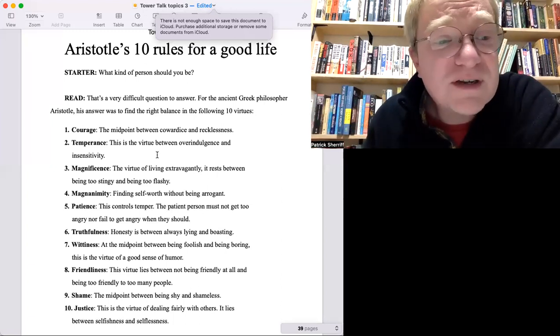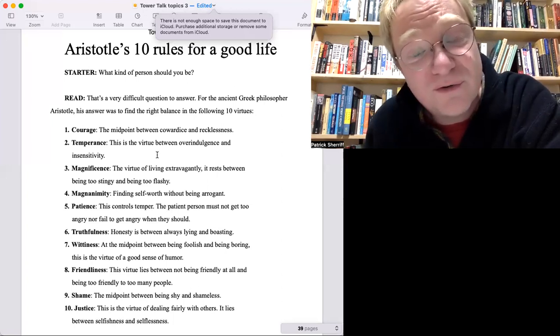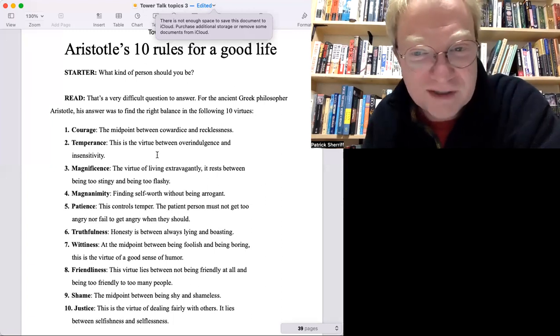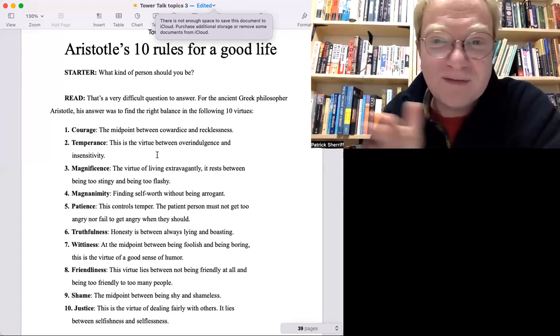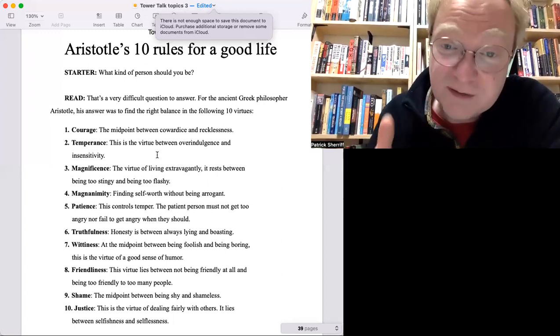Number seven: wittiness. That means being funny, so that's good. But don't be too funny, don't spend all your time being funny. You have to have a middle ground. Number eight: friendliness. Be friends to people who deserve to be friends, but don't be friends with idiots, right?